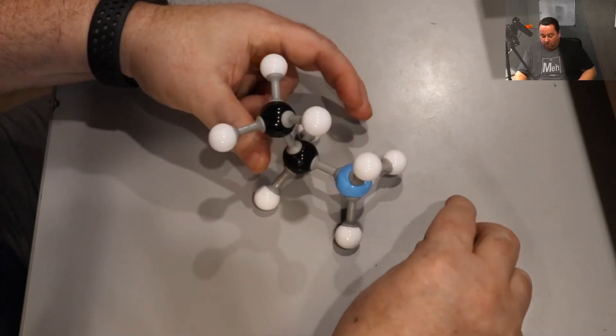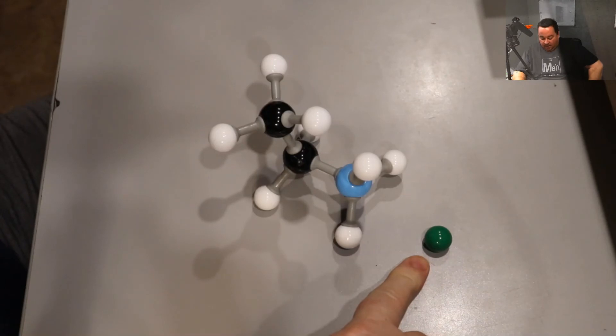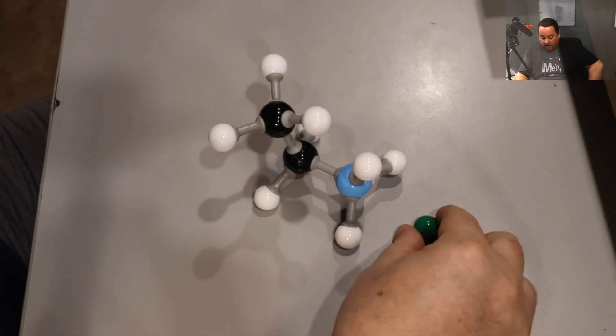The chloride, having lost an H positive, is left with a negative charge. And the NH3 positive and the Cl negative attract each other by the ionic force, the electrostatic force of attraction.